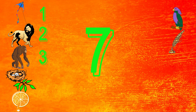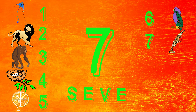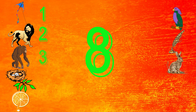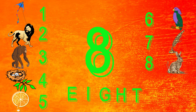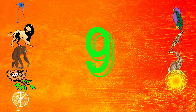7 - S E V E N. 7 - Q for quill. 8 - E I G H T. 8 - R for rabbit.